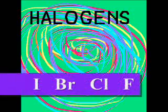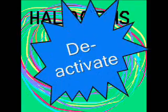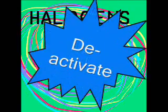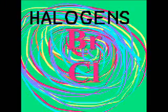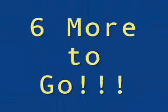Halogens are crazy and mixed up, guys — they ortho/para direct before your eyes, but deactivate. Yeah, that's the big surprise! First in the line comes iodine, bromine and chlorine, reactive fluorine. Here we are neutral at hydrogen — six more to rehearse, there in the next verse.